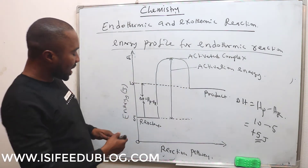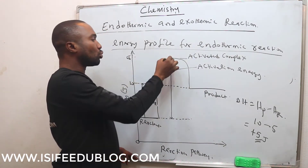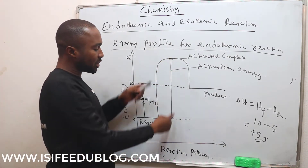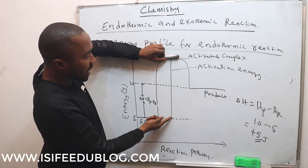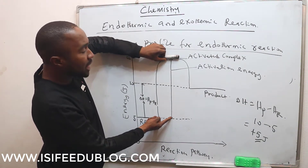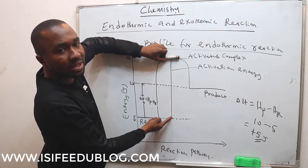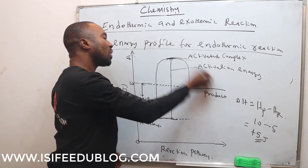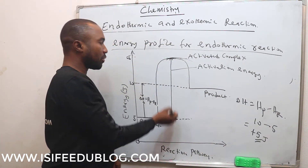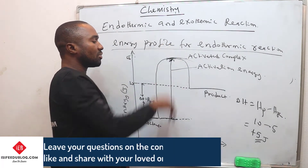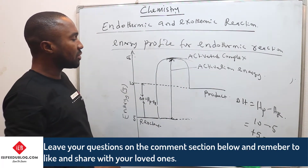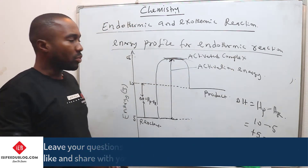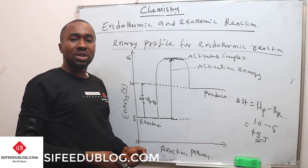In an endothermic reaction, the enthalpy change is positive. The distance from the reactant to the upper point of the curve is called the activation energy. That is the height of the energy profile — from where the reactant started up to the top of the curve. The highest point on the curve is called the activated complex. We can also call it the transition state.